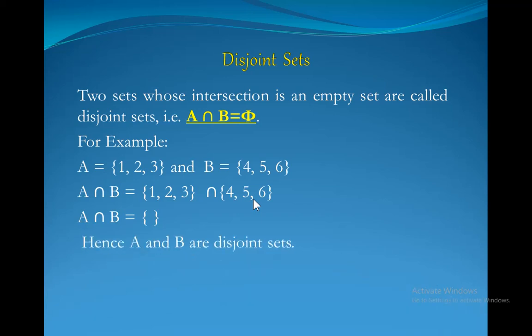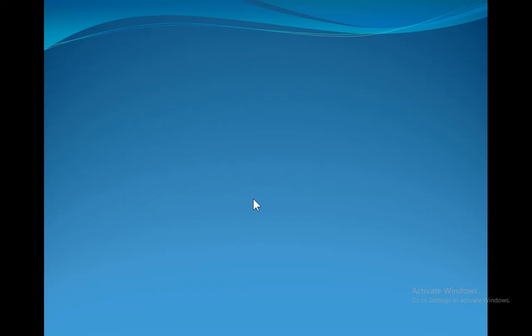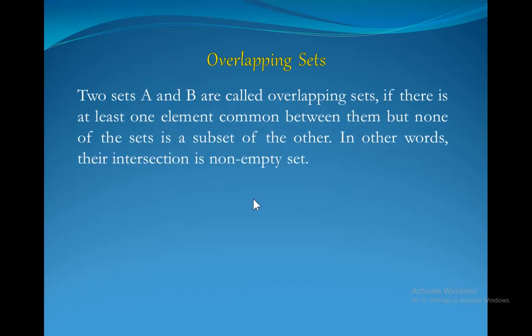Hence A and B are disjoint sets. Next we have another definition: overlapping sets. Let's see the definition first.